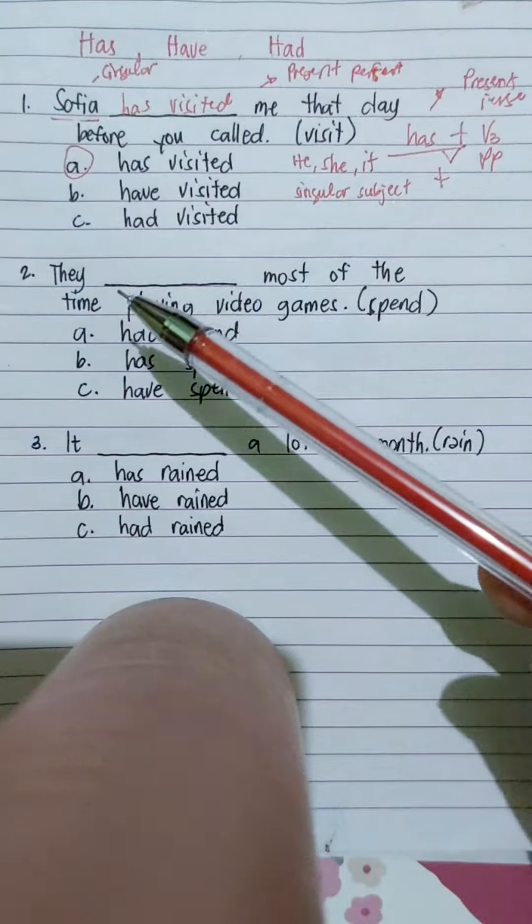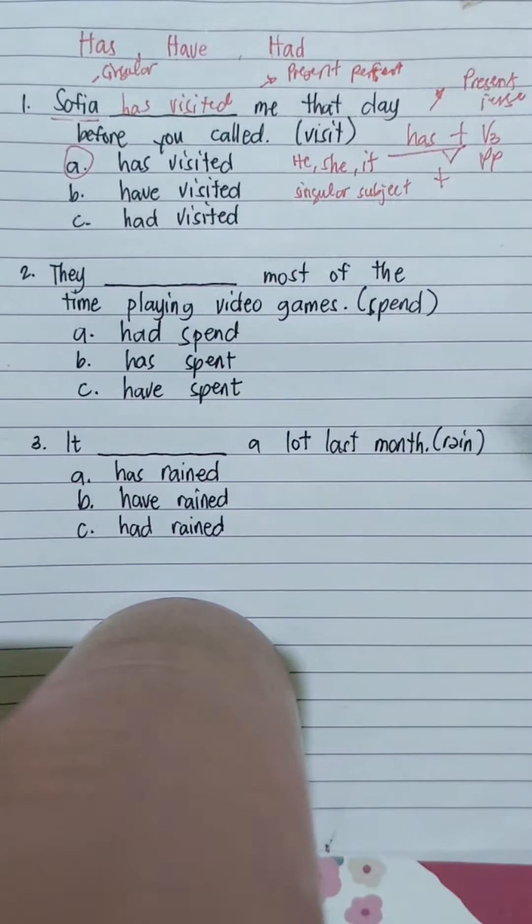The second one: They blank most of the time playing video games. The verb here is spend. What do you think is the correct answer?